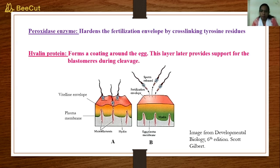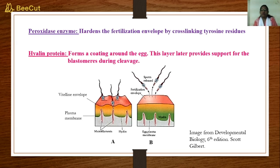All these changes make it literally impossible for any other sperm to enter the ovum, thus avoiding polyspermy. This is all about the blocking of polyspermy in sea urchin. Thank you very much, I hope you liked the video.